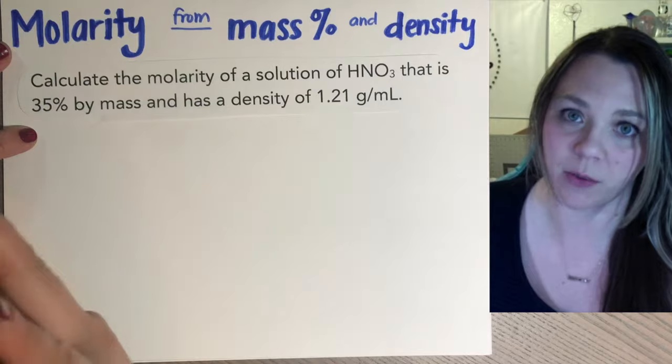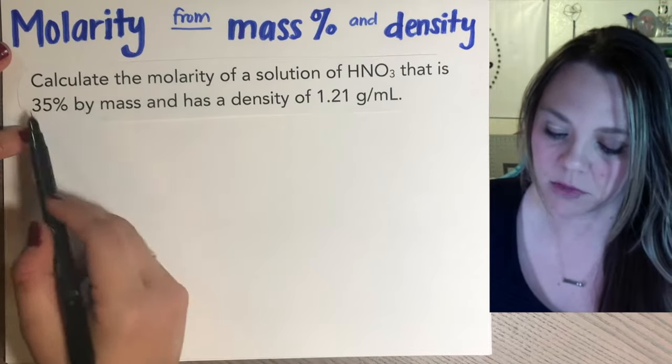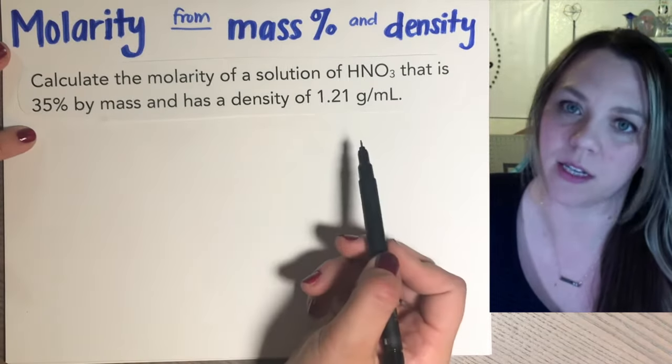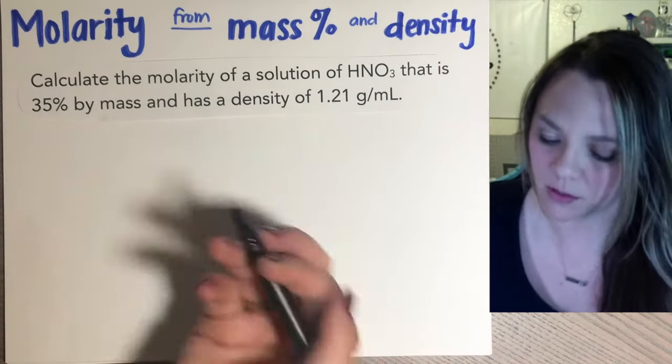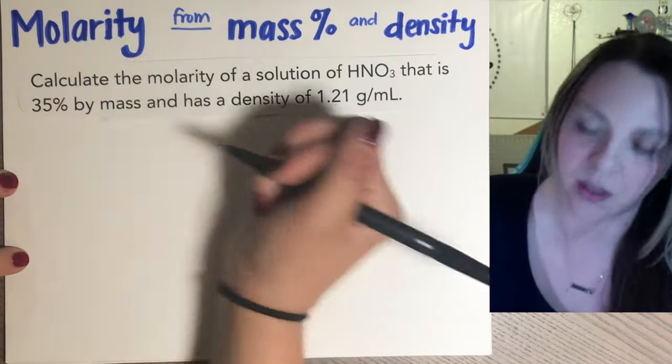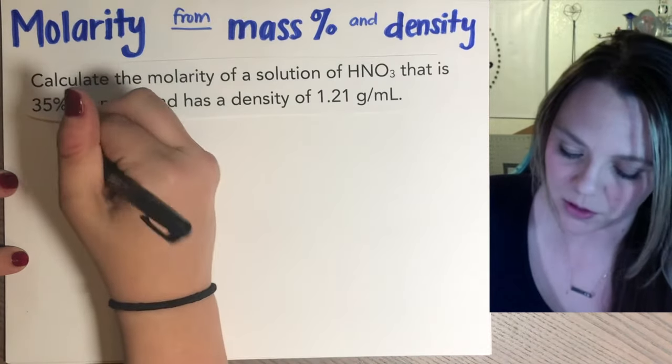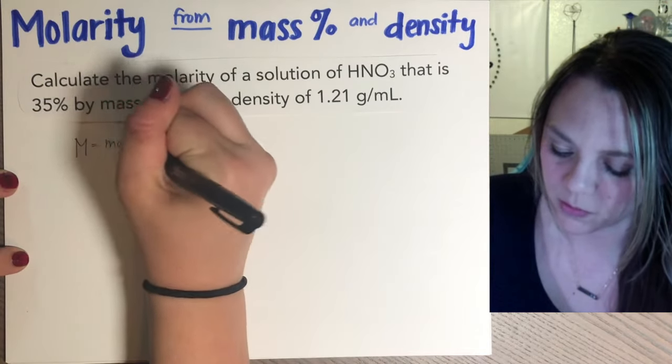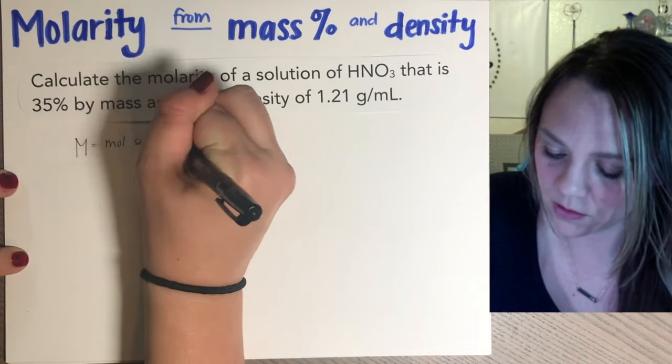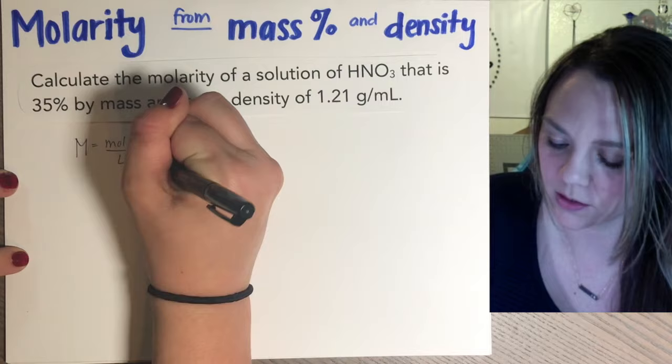Okay, so you're given two pieces of information. You are given the mass percent and you are given the density. And then you're supposed to calculate molarity. If you don't know what to do, you might be like, what the F? Okay, it's not too difficult once you know what you're doing. Okay, so molarity, first of all, is moles of solute divided by liters of solution.